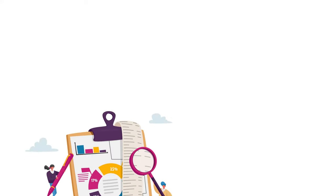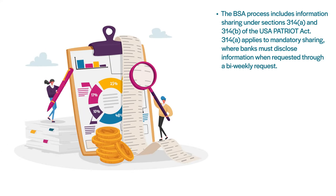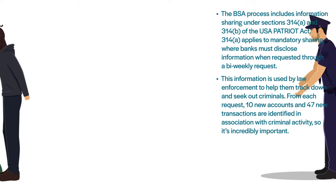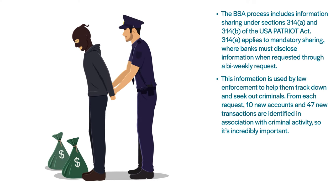The BSA process includes information sharing under Sections 314-A and 314-B of the USA PATRIOT Act. Section 314-A applies to mandatory sharing, where banks must disclose information when requested through a bi-weekly request. This information is used by law enforcement to help track down and seek out criminals. For each request, 10 new accounts and 47 new transactions are identified in association with criminal activity, so it's incredibly important.